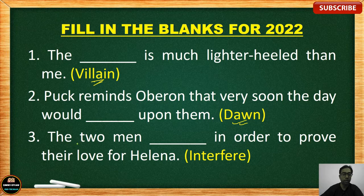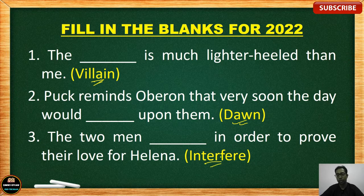Number 3: The two men blank in order to prove their love for Helena. The correct answer here is 'interfere.' Remember the words.